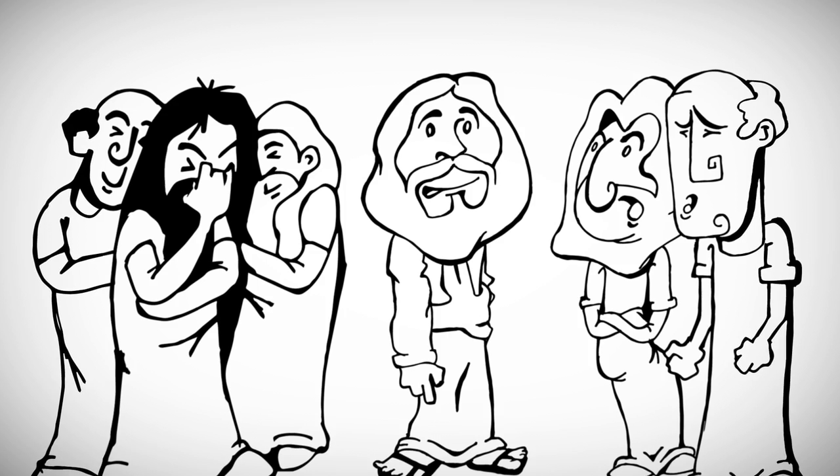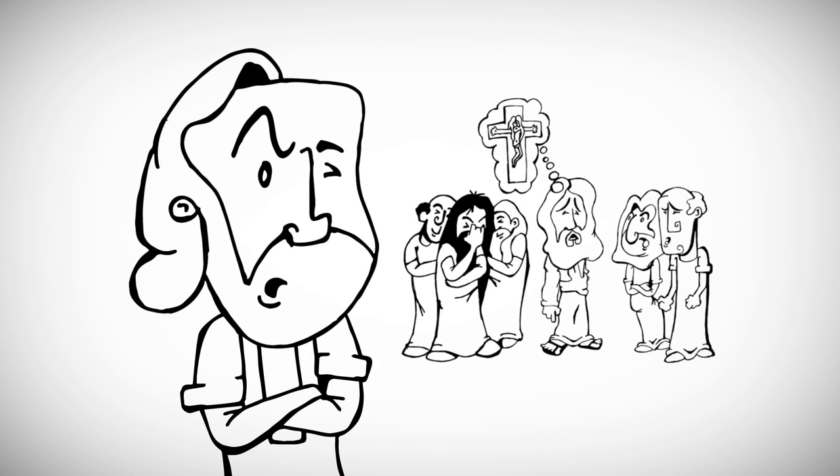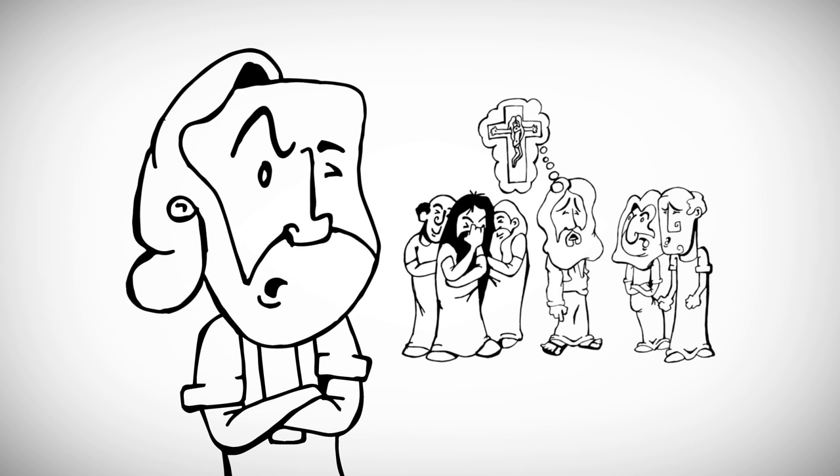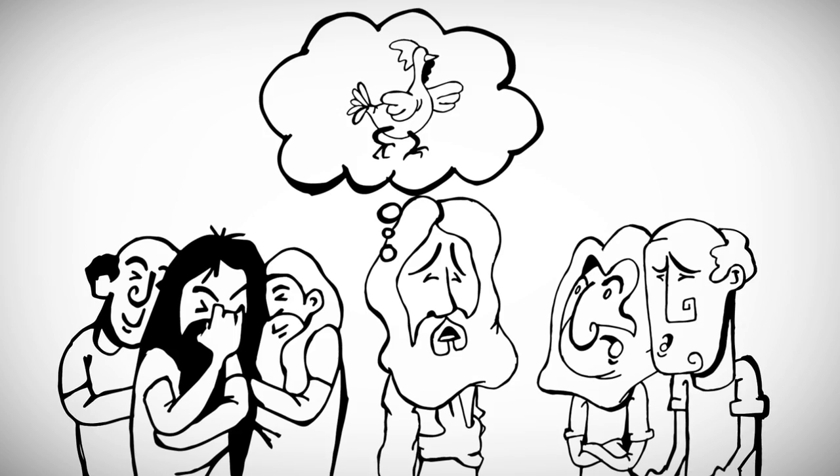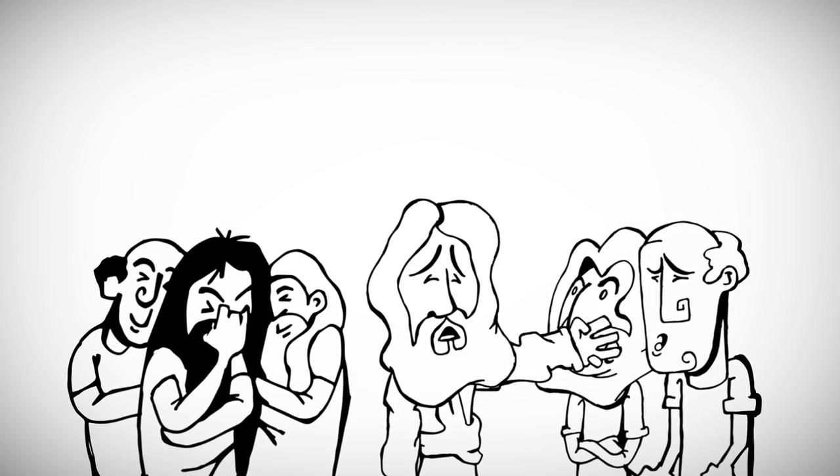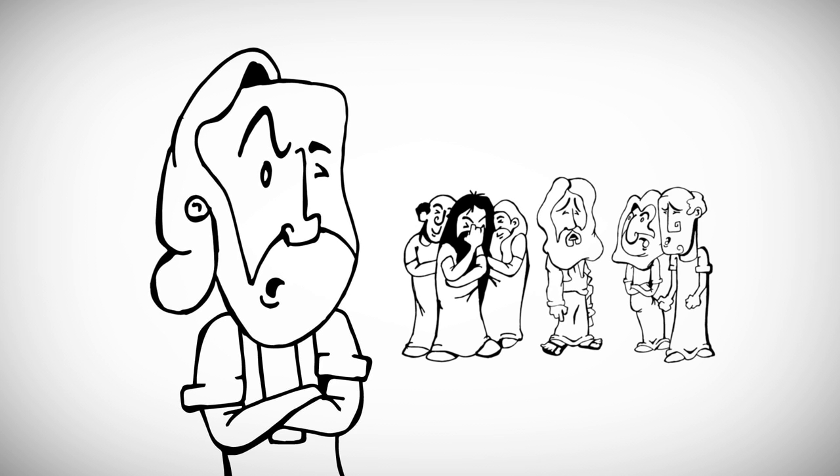Then something changed. Jesus had this bad habit of talking a lot about death. His death, to be exact. And the disciples didn't like it. But they listened, and Peter listened, as Jesus told him that he would disown this man he so faithfully followed, not just once, but three times. Three times before the rooster crowed.